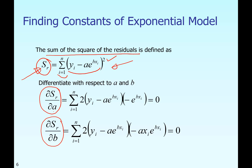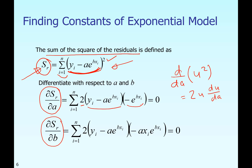To take the derivative with respect to a, we apply the chain rule: differentiating u² with respect to a gives 2u·(du/da). Applying this here gives 2 times the expression inside times the derivative of the inner expression with respect to a, yielding one equation. We then set that equal to zero. We apply the same chain rule taking the derivative with respect to b, which gives the second equation, and we set that equal to zero as well.